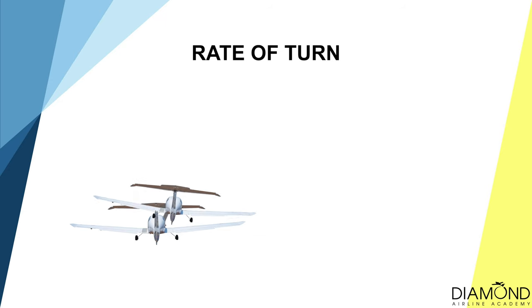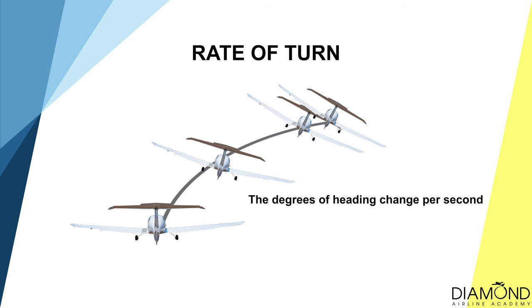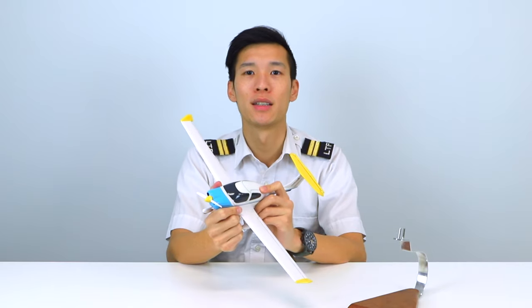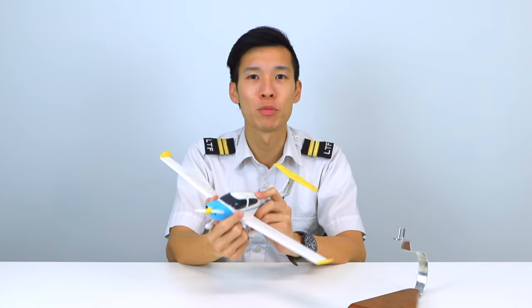The next term to define is the rate of turn. During a turn, the aircraft changes direction, and the rate of turn describes the rate of change in direction. The unit is normally in degrees per second or degrees per minute. If the aircraft is in a steeper turn, the change in direction will be faster and the rate of turn will be higher. In a shallower turn, the change in direction will be slower and the rate of turn will be lower.